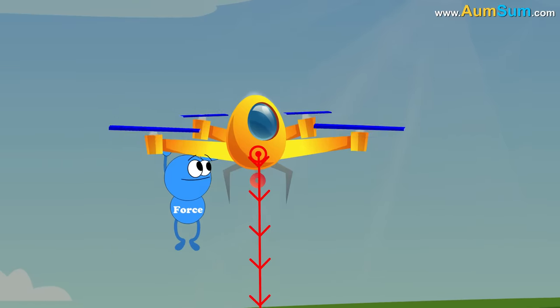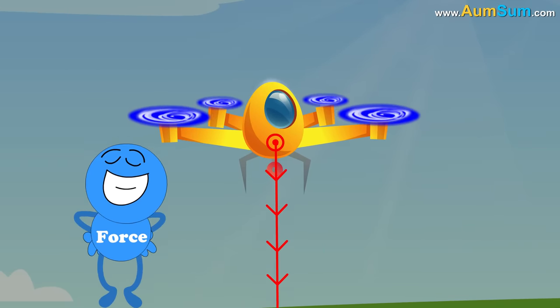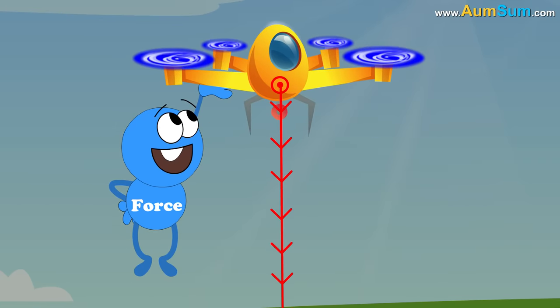If the speed of the rotation of rotors is increased to such an extent that the net force generated becomes greater than the gravitational force, then the drone starts going up, as in climbing.